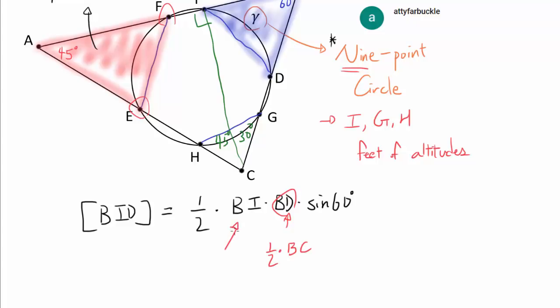And now, once we can write BI as something times AB, then we're going to have 1/2 AB times BC times sine of 60, which is area of triangle ABC times these constants. So once we can write BI in terms of AB, we are done.